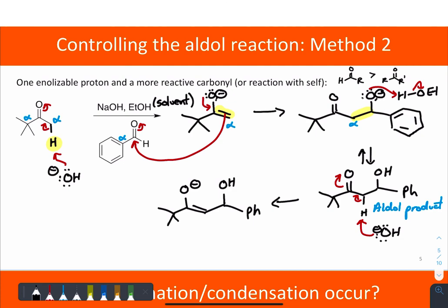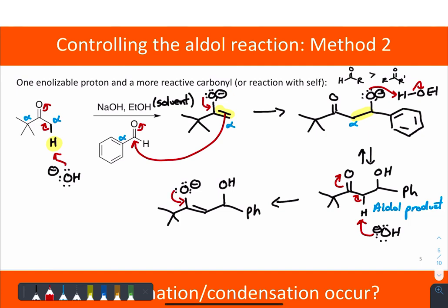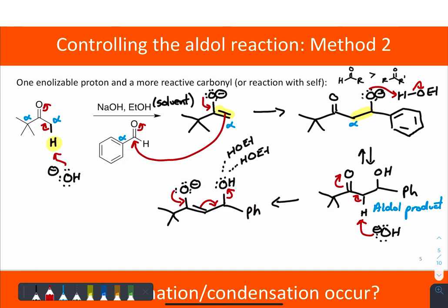The next step actually resembles the collapse of a tetrahedral intermediate. The lone pair on the oxygen pushes down, repels the pi bond, and those electrons travel toward the hydroxyl group. That hydroxyl group, through electronic repulsion and hydrogen-bond stabilization with the ethanol in solution, breaks away — similar to the collapse of a tetrahedral intermediate, where a repulsive effect allows even a bad leaving group to leave, and it's also stabilized as it leaves through hydrogen bonding with the solvent.